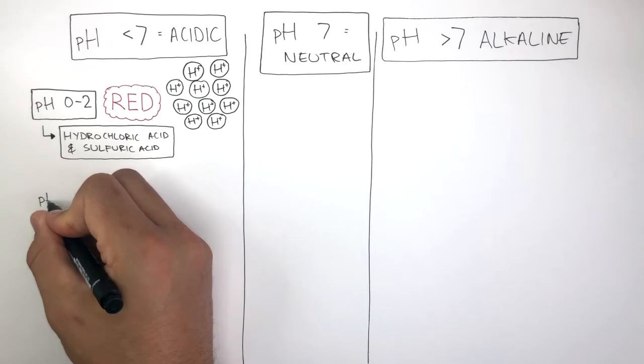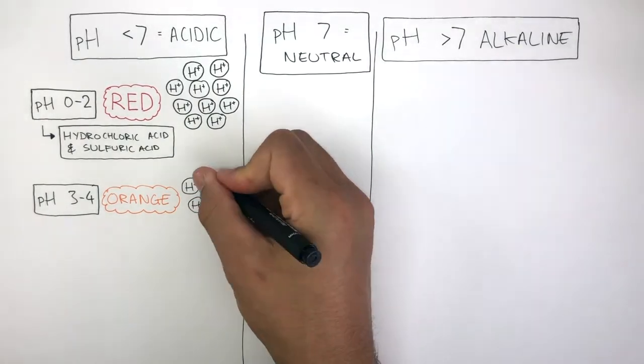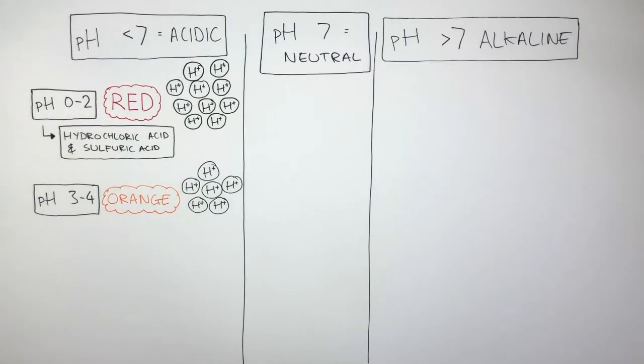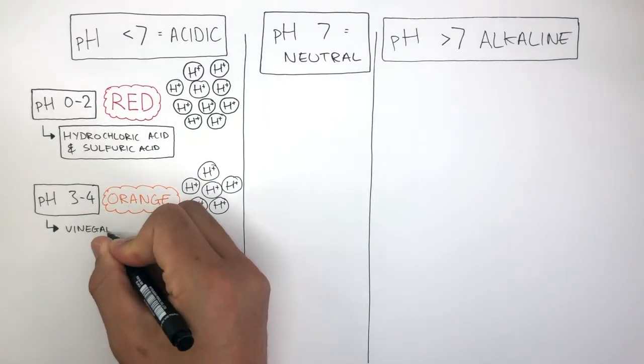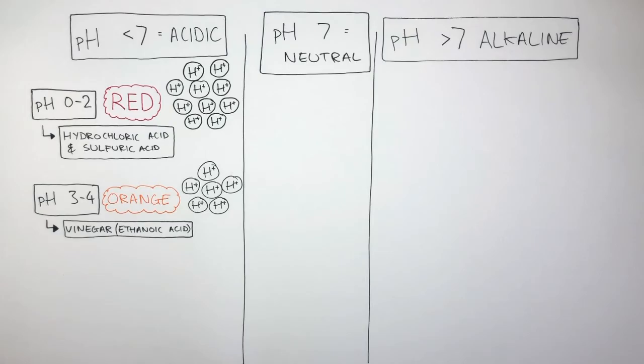A solution with a pH of between 3 and 4 will cause Universal Indicator solution to be orange and there will be less hydrogen ions dissolved in solution. Vinegar containing ethanoic acid is an example of a substance with a pH of between 3 and 4.